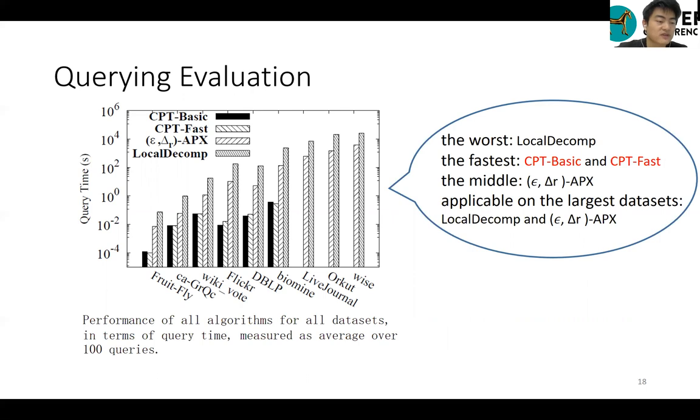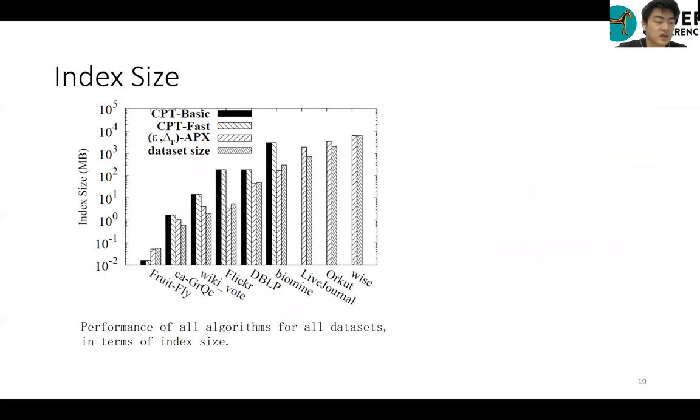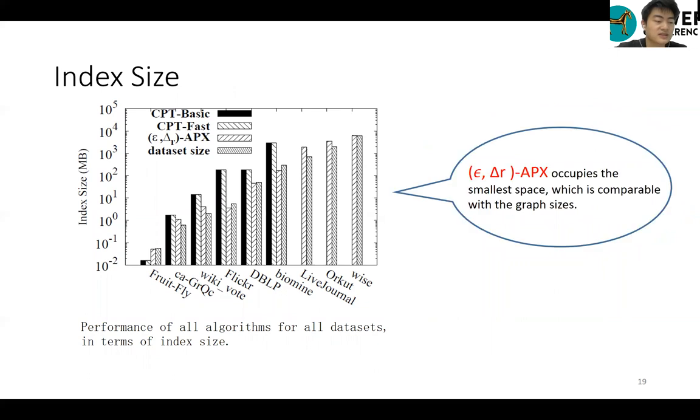Our approximate indexing scheme works well on three largest graphs. The query by apex method is faster than the online algorithm. As for the index size, the approximation index is much smaller than the CPT index.